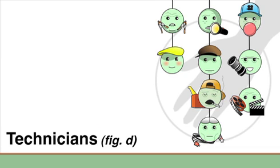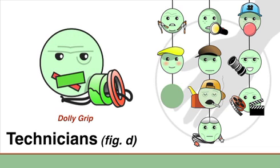For instance, if the DOP chooses to mount the camera on a dolly, then the dolly grip is responsible for moving the dolly both during the shot and between takes.